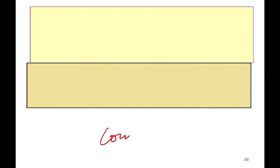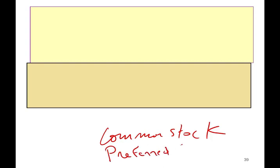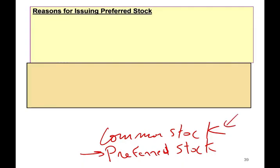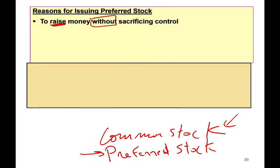Why do companies issue preferred stock? We already talked about common stock, and now we're going to be looking at preferred. So if you don't know what common stock is, please look in this playlist. So why do we issue preferred stock? One reason is to raise money — to get money without sacrificing control. Simply put, get the money and we don't share control with anyone else.